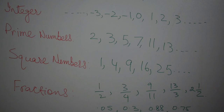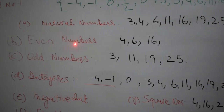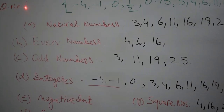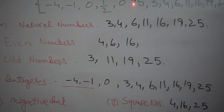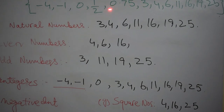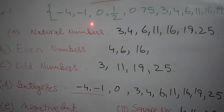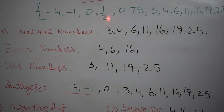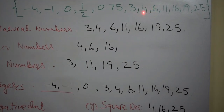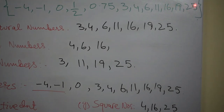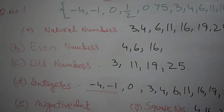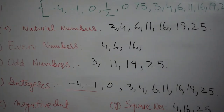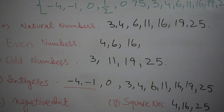Let's proceed towards the exercise. Well dear students, you can see I have written here question number one and for question number one they have given these numbers. You can see these numbers over here: minus 4, minus 1, 0, 1 by 2, 0.75, 3, 4, 6, 11, 16, 19 and 25. From these numbers, this set is given. So first of all, we have to select and pick the natural numbers, which is part A of question number one, exercise 1.1.